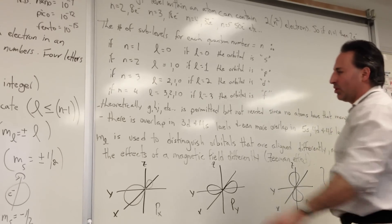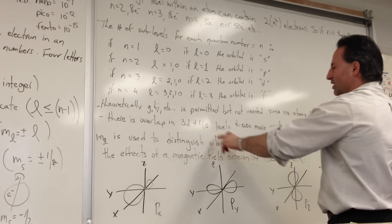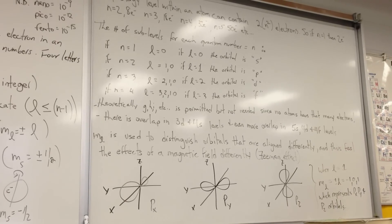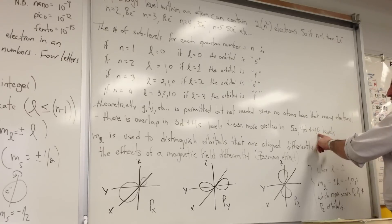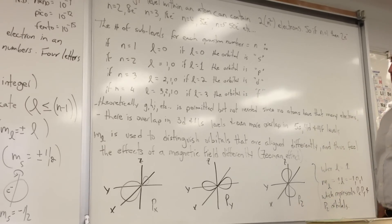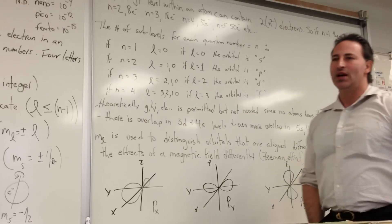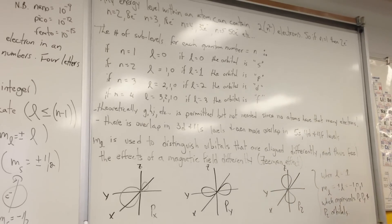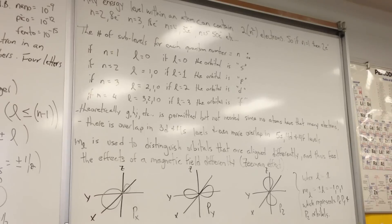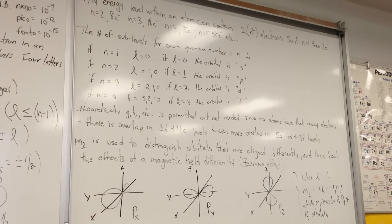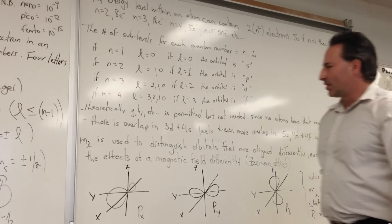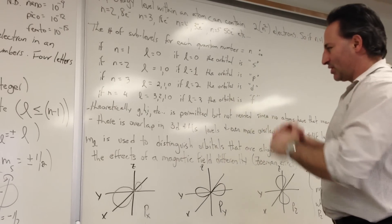It's also important to point out that 3d and 4s orbitals overlap. They have about the same amount of energy, and same with 5s, 4d, and 4f levels have approximately the same energy level. And that's why you sometimes see, when you're writing electron configurations, that the levels that you thought were going to fill don't fill, but some other level fills before. And that's because the energy levels are very close together, and depending on the atom, it can actually switch place.